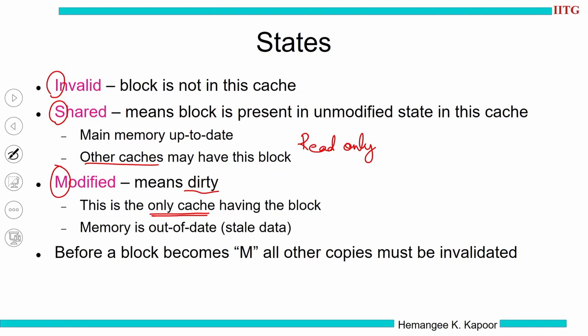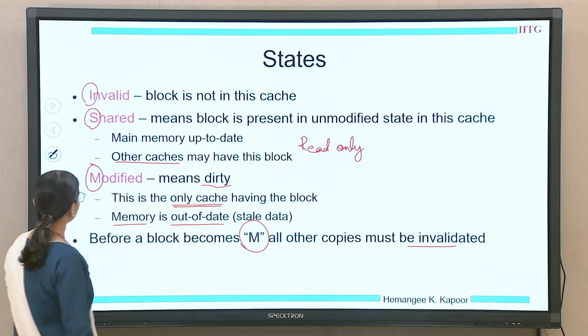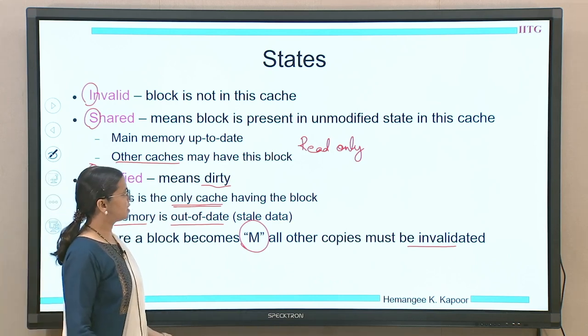In the VI protocol, whenever a write happened, memory was also updated, so memory always had an up-to-date copy. But in MSI (write-back), only this particular cache has the up-to-date copy — memory has stale data. Being an invalidation-based protocol, whenever the cache goes to state M, it must invalidate all other copies.